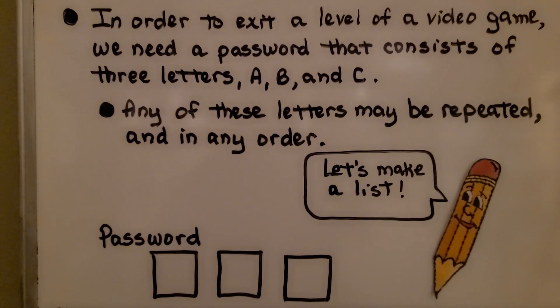In order to exit a level of a video game, we need a password that consists of three letters, A, B, and C. Any of these letters may be repeated and in any order. We need to find A, B, and C, or C, A, B, or A, A, A. We need to find all the possibilities.